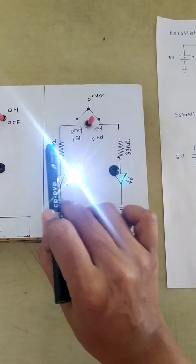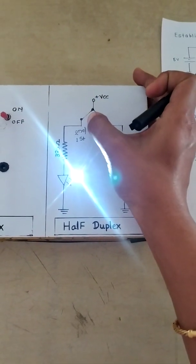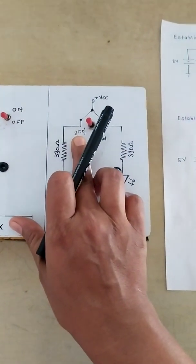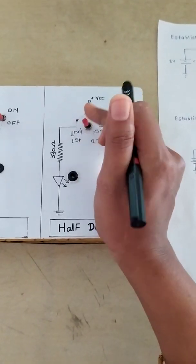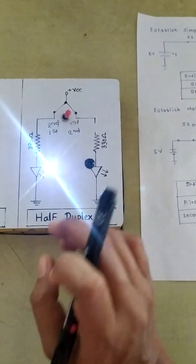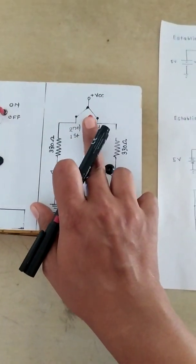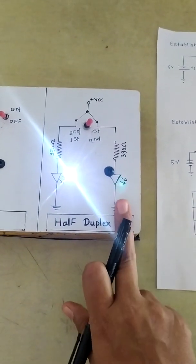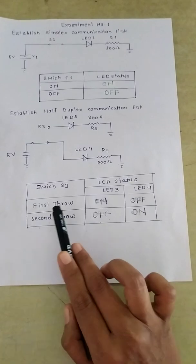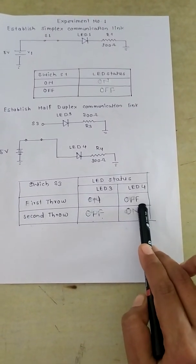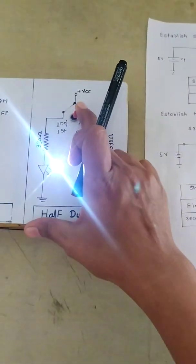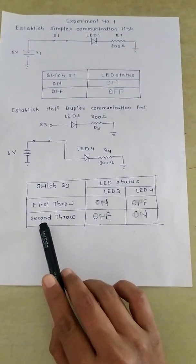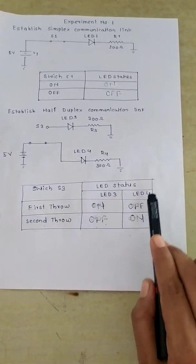This position we are considering as the first throw and this position we are considering as the second throw. For the first throw, LED 3 is turned on and LED 4 is turned off. For the second throw, LED 3 is turned off and LED 4 is turned on.